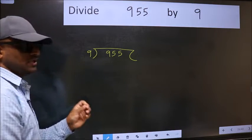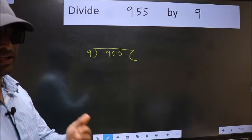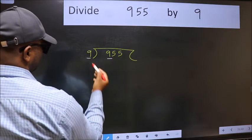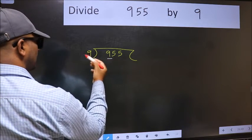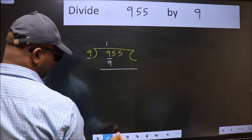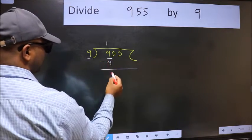This is your step 1. Next. Here we have 9 and here 9. When do we get 9 in the 9 table? 9 once 9. Now we should subtract. We get 0.